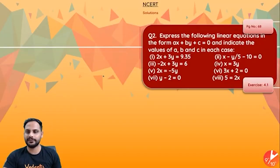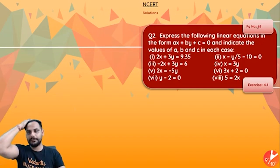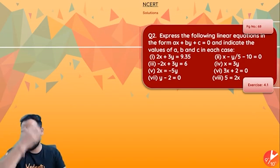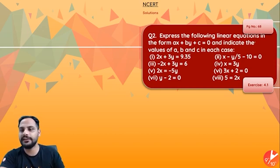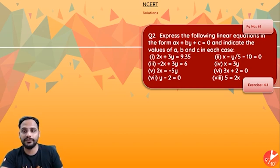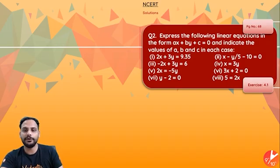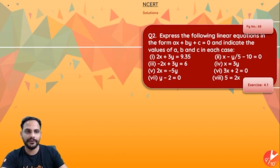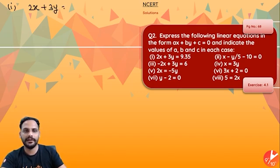Next question: Exercise 4.1, page number 68 in your NCERT, question number two. Express the following linear equations in the form ax + by + c = 0 and indicate the values of a, b, and c in each case. We need to represent all these equations in the general form ax + by + c = 0. The first one is 2x + 3y = 9.35 bar.